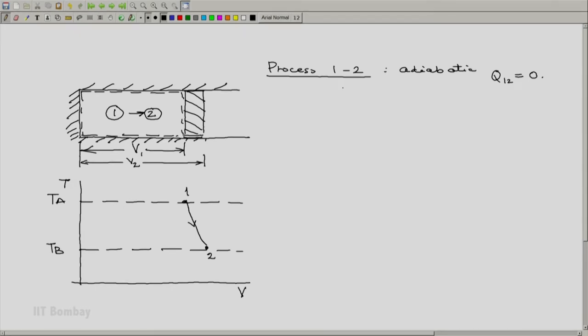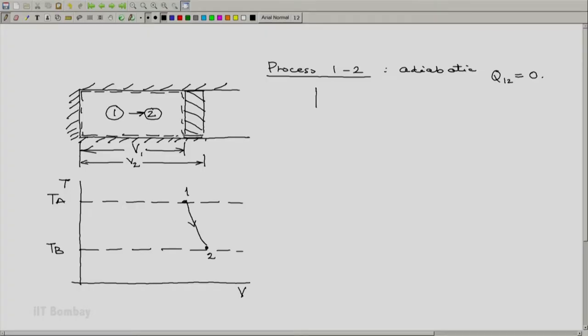We have already shown that for an ideal gas under these conditions—a quasi-static process, only PDV work, and a stationary system—DE equals DU. We are not expecting the gas to be moving at different velocities or going up and down in a gravitational field. So under these conditions, PV raised to gamma will be some constant. This exercise we have already done.